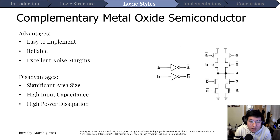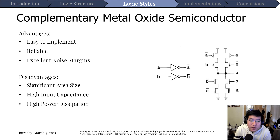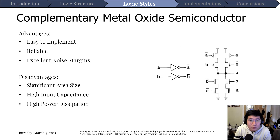First, returning to standard CMOS — complementary metal oxide semiconductor. The advantages are that it's very easy to implement, reliable, and has excellent noise margins. However, CMOS has its own flaws when it comes to creating smaller circuits. The disadvantages include significant area size because you have to size up the PMOS transistors. You'll also find CMOS circuits have much larger area than other logic styles, high input capacitance, and generally higher power dissipation compared to other styles at a basic level.